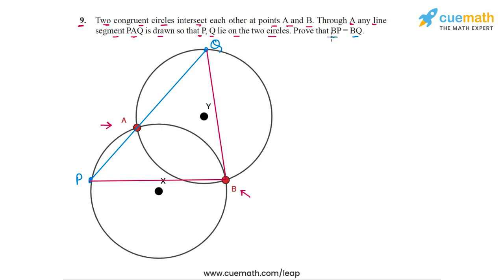Now we have to prove that BP is equal to BQ. To prove this, we can prove that in triangle BPQ the two angles BPQ and BQP are equal, because if these two angles are equal, the sides opposite them will also be equal — so BP will equal BQ. This is what we will focus on proving.